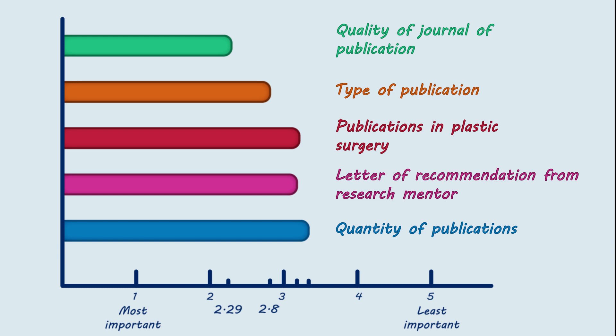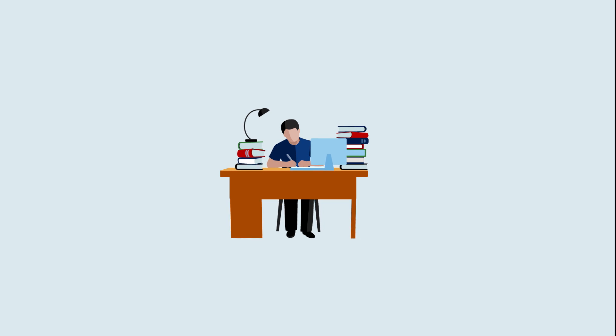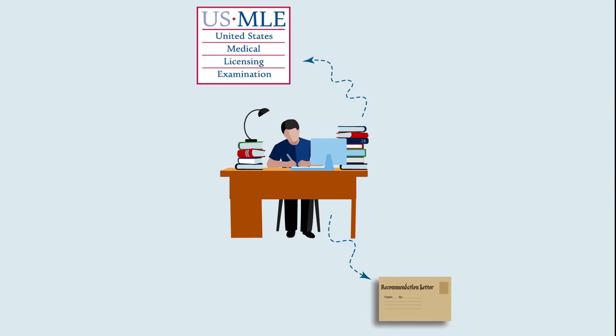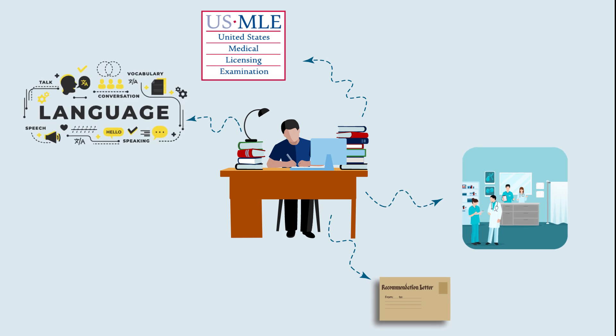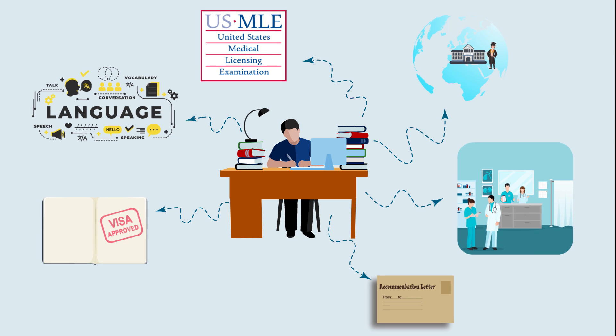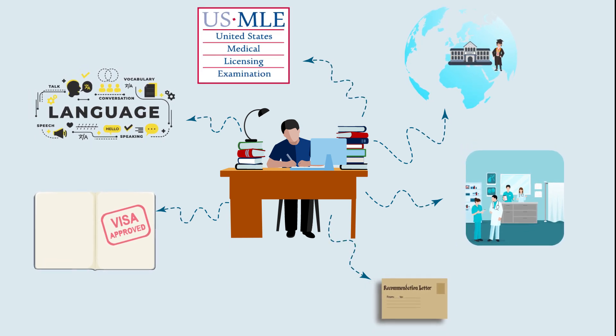Although this study mainly assessed US students, it can give some insights into how program directors view dedicated research time. One major limitation of these two studies is the lack of applicant's characteristics, such as USMLE Step 1 and Step 2 CK scores, letters of recommendation, and other aspects of the application which are important for both US students and IMGs. US clinical experience, language proficiency, visa status, and country of medical school are all important aspects of IMGs application and might have affected the decision to do research in the first place.